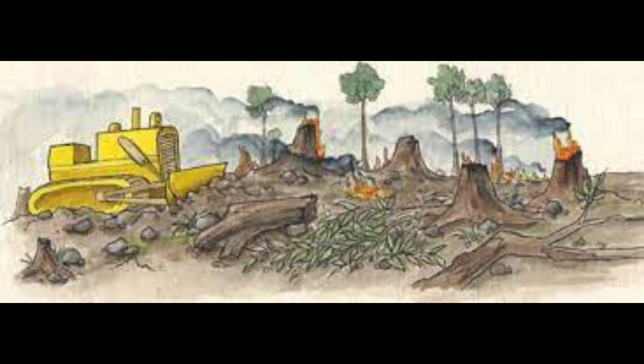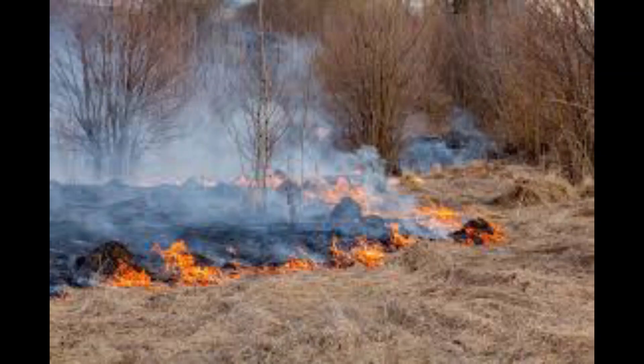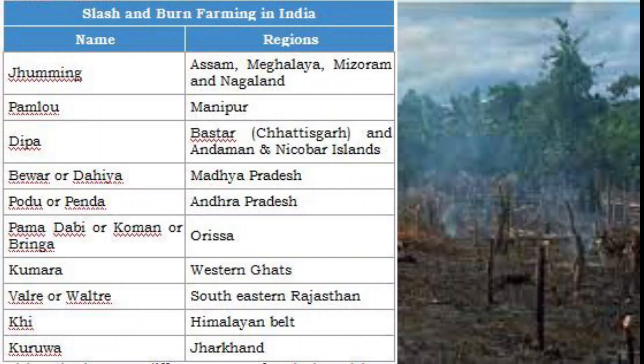The farmers harvest the trees in the forest and burn them. A small patch of land is cleared and crop is cultivated. Potash present in the burned soil increases the nutrient content. The ashes from the burned vegetation act as natural fertilizer.